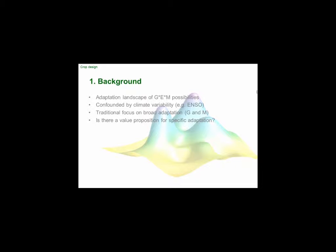Think about all the genotypes you can make, all the environments and management systems you can grow them in — there are squillions of combinations. If you think of each point as one of these combinations and the vertical distance is the yield you get, that gives you a landscape and what you're trying to do in crop improvement is find the peak. But you don't quite know where you are, and next year this whole landscape will change — particularly in an environment where you flip from El Niño to El Niño. The whole thing is like an ocean floating around you, and you're trying to find these peaks and they're not even staying still.